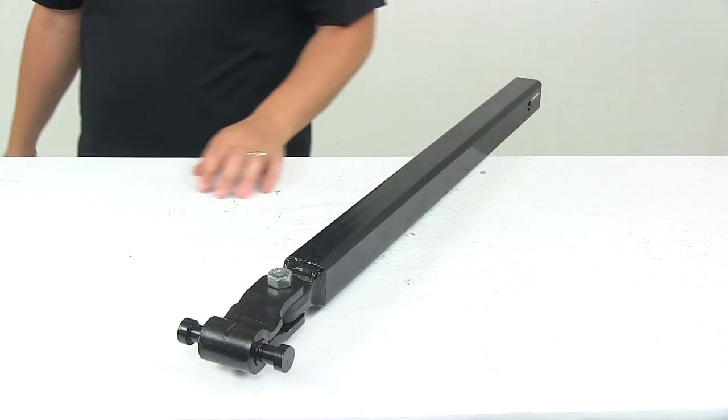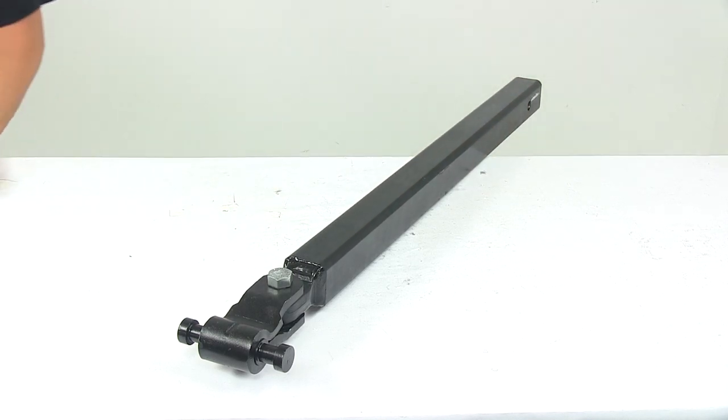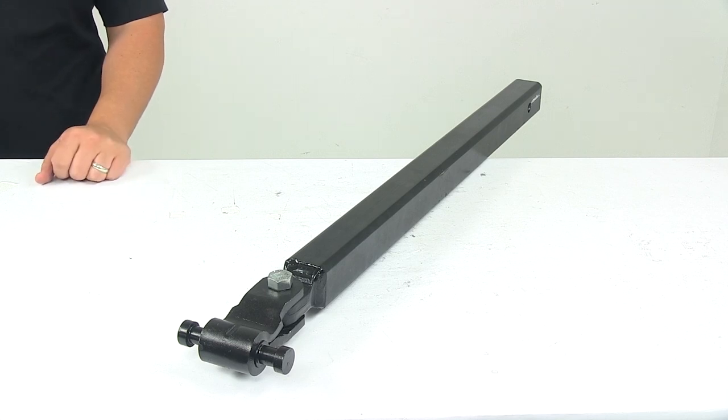That's going to do it for today's look at the lock and roll receiver mount trailer coupler for the trailer side with the 30 inch tongue extension.